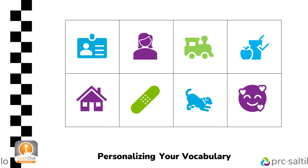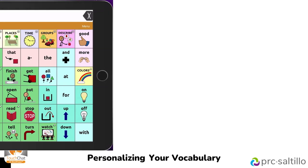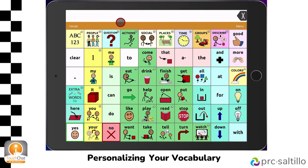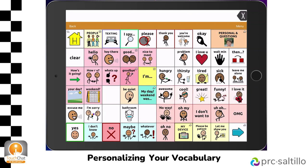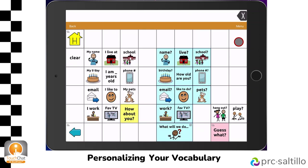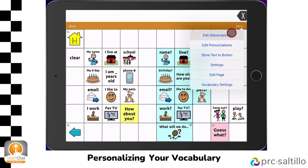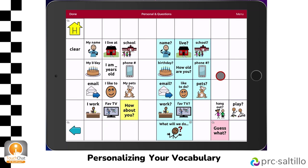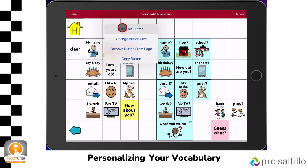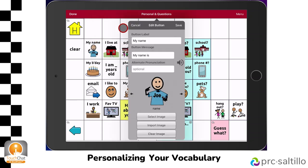Let's see how you can edit a button to start adding these into their vocabulary file. You can add personal information in Word Power on the social page under Personal and Questions. You'll see there are buttons for their name, birthday, and where they live. Tap on Menu, then Edit Page. The red ribbon across the top lets you know you're in edit mode. Tap on the button you want to edit, then Edit This Button.